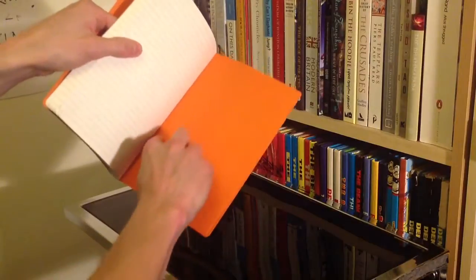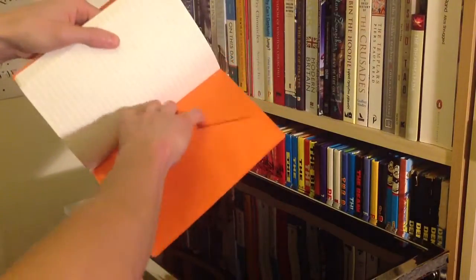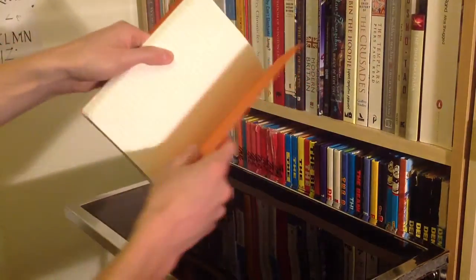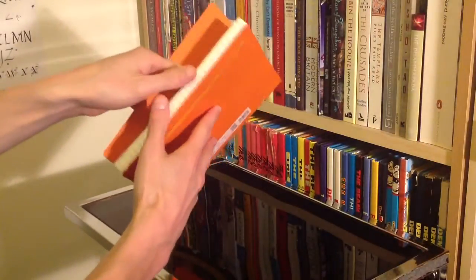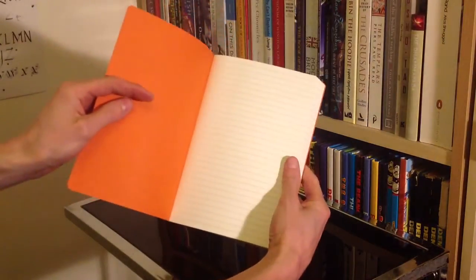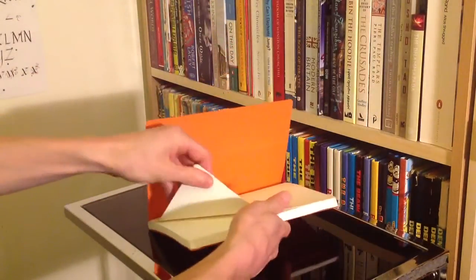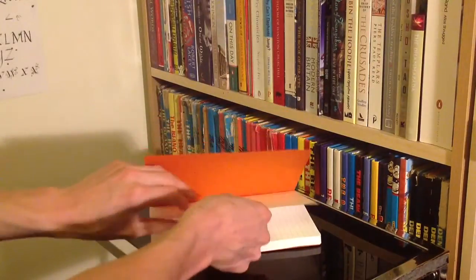The back has one of these diagonal cutaway pockets so you can keep loose bits and pieces in there. As you can see, this is a lined journal and the paper is pretty thick.